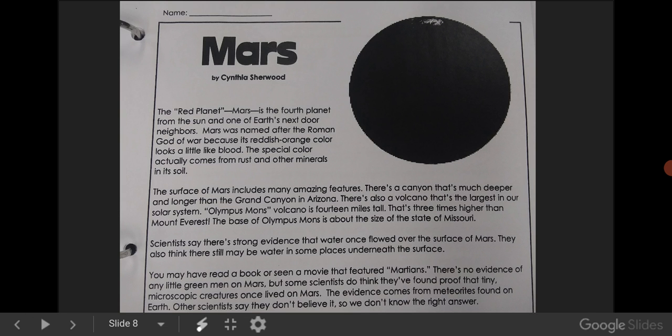The surface of Mars includes many amazing features. There's a canyon that's much deeper and longer than the Grand Canyon in Arizona. There's also a volcano that's the largest in our solar system. Olympus Mons volcano is 14 miles tall. That's three times higher than Mount Everest. The base of Olympus Mons is about the size of the state of Missouri.